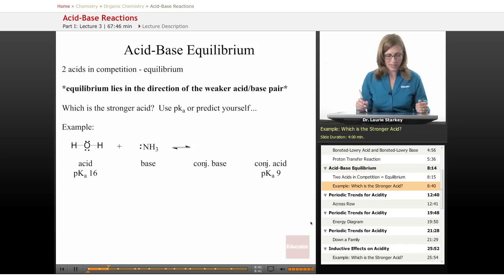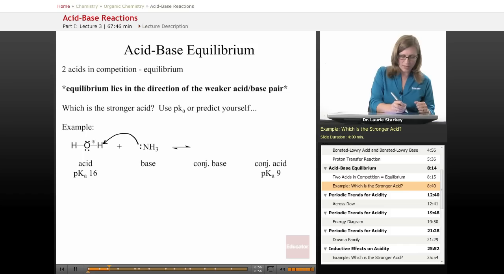But here's an example. Let's say we have water acting as an acid and ammonia acting as a base. Let's see what that proton transfer reaction would look like. The acid donates one of its protons to the base, so our mechanism is the base grabs the hydrogen, leaves the electrons behind on the oxygen.